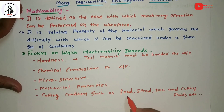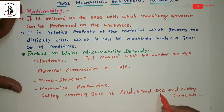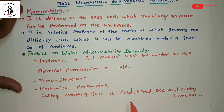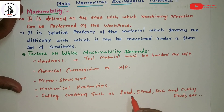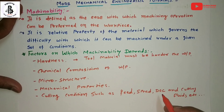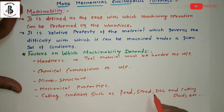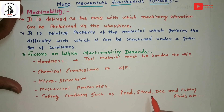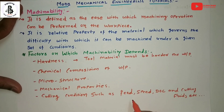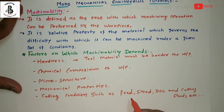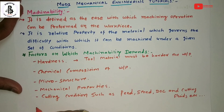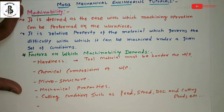Cutting conditions such as feed, speed, depth of cut, and cutting fluids are parameters that affect machinability. Different values of feed, speed, and depth of cut — which are also lathe machine parameters — play a major role in controlling the machinability of workpiece materials.